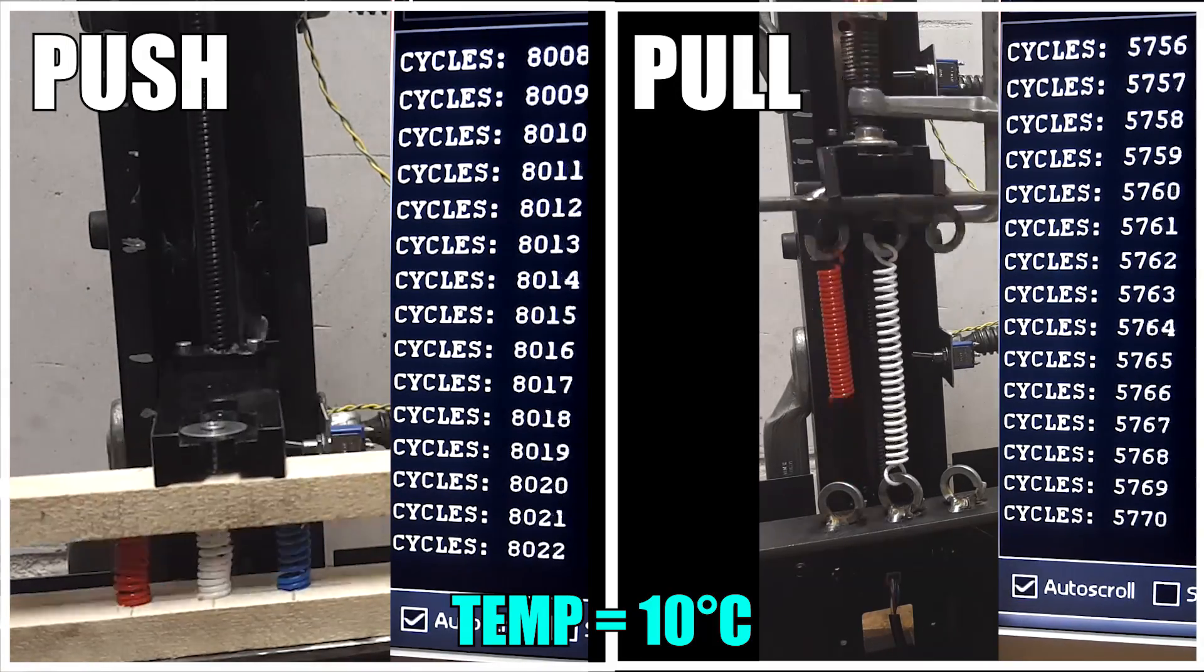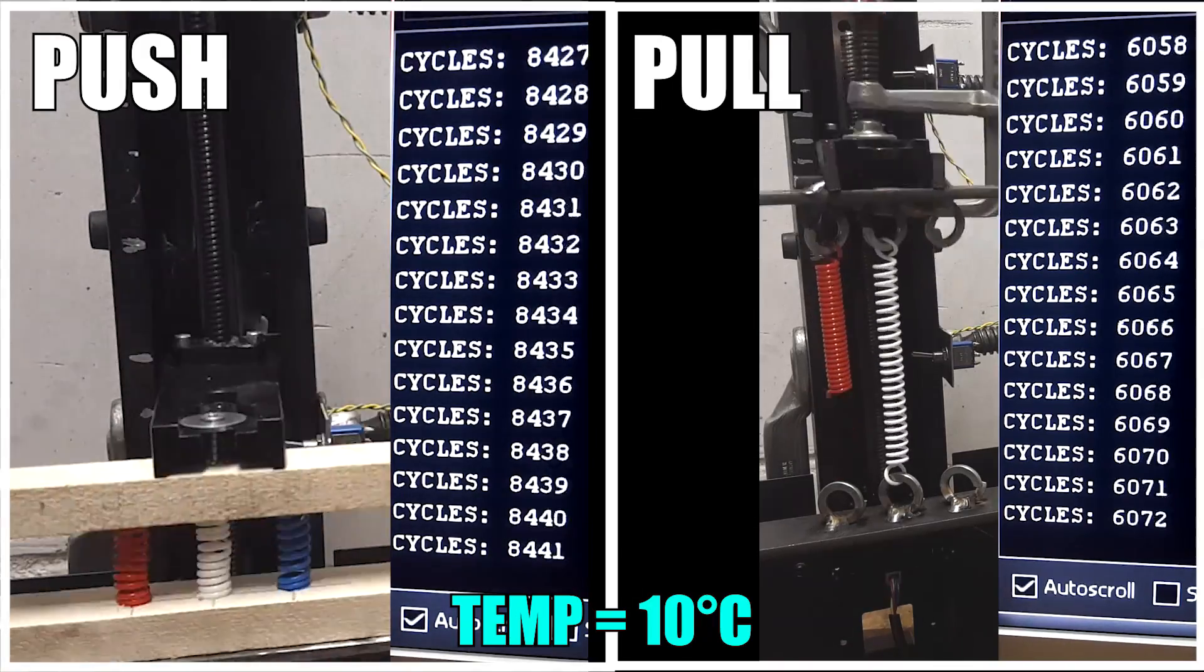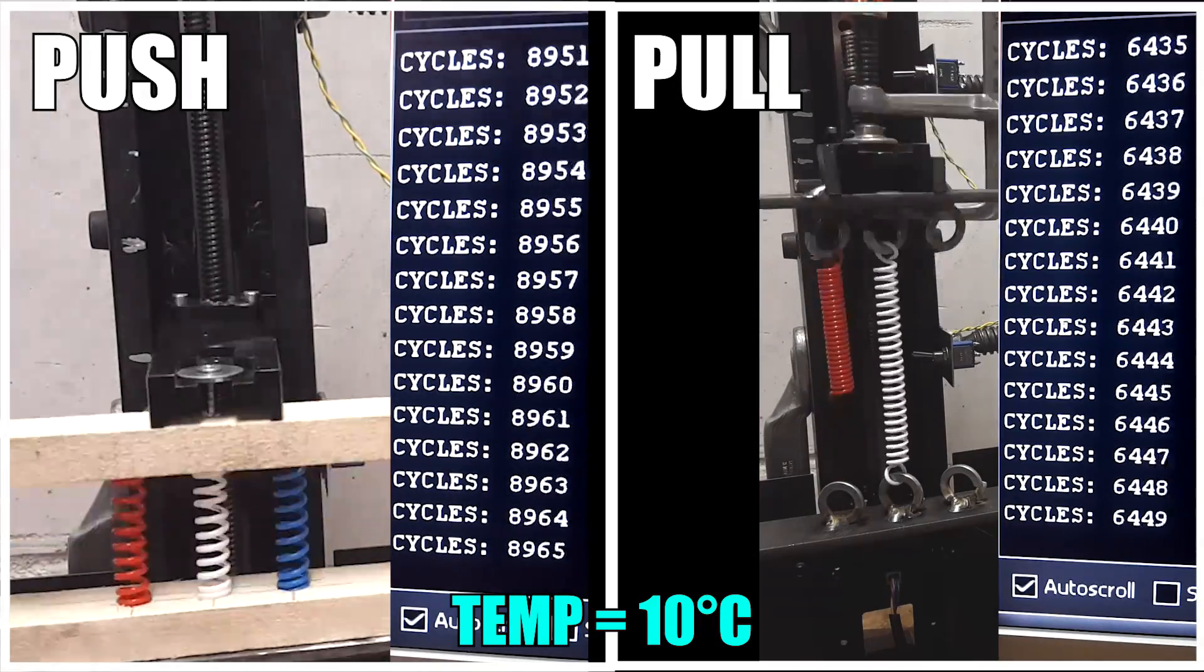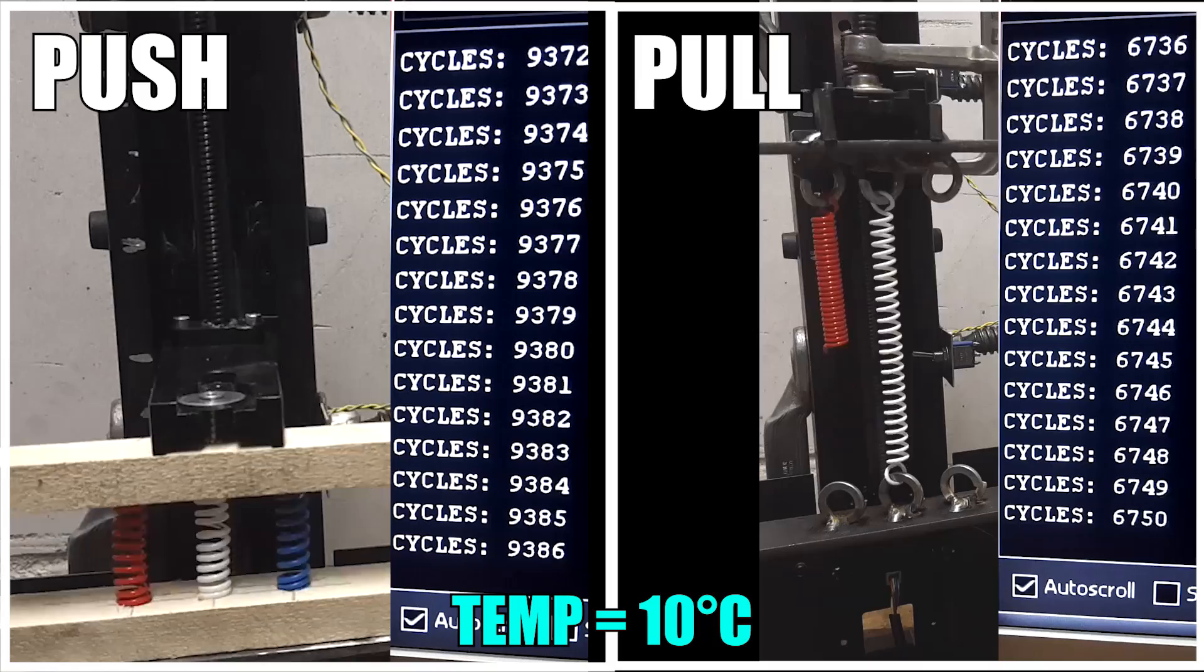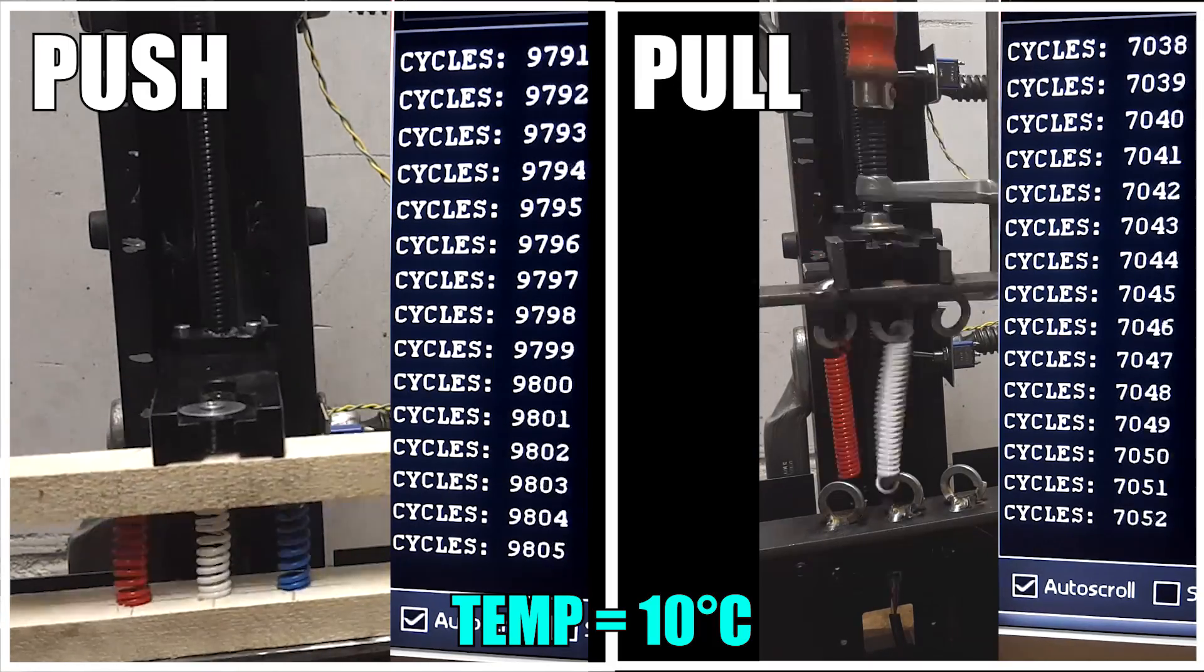Unfortunately the pull spring test did not reach the 10,000 cycles and this is because of an interference problem that stopped the test prematurely. But regardless of this, the amount of cycles that have been completed will correspond to 20 cycles a day approximately for two years of usage. So now let's have a look at the springs after all those cycles.